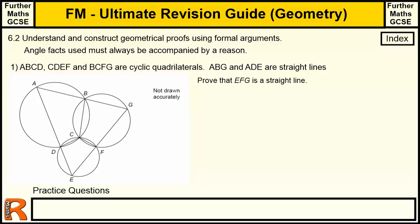Now, in this question we're given three quadrilaterals drawn in a circle, and one big triangle that's joined up. They're cyclic quadrilaterals because they're in a circle and are four-sided shapes. We're told ABG is a straight line and ADE is a straight line, so we've got to figure out that a third line is also straight.